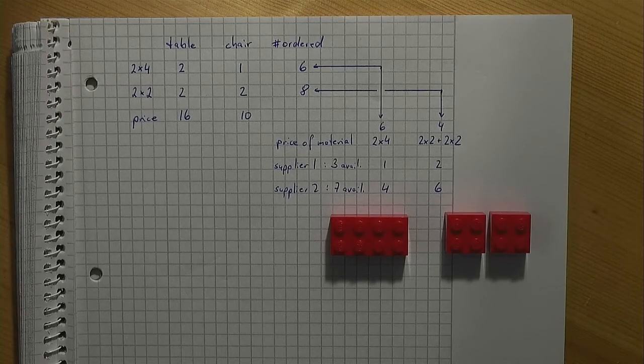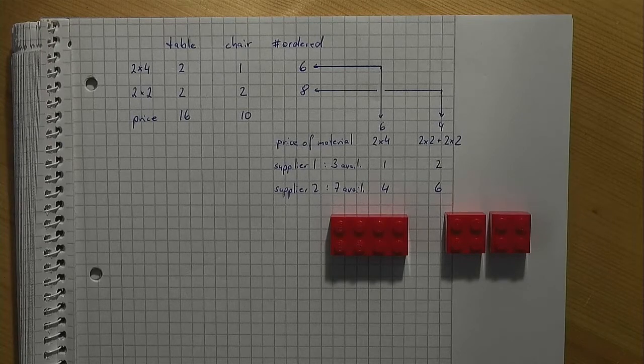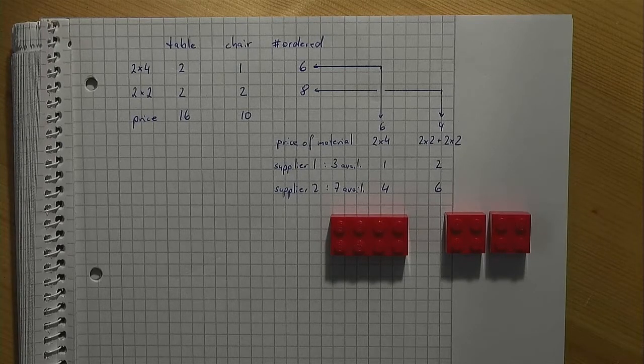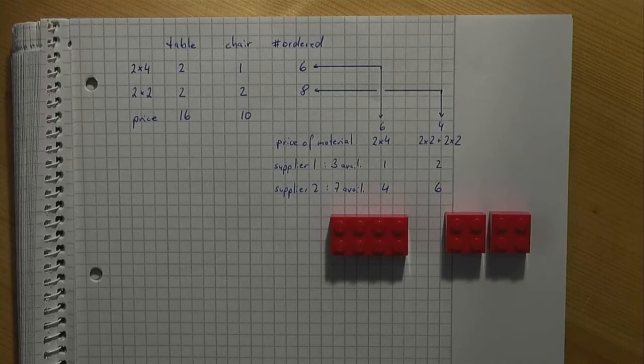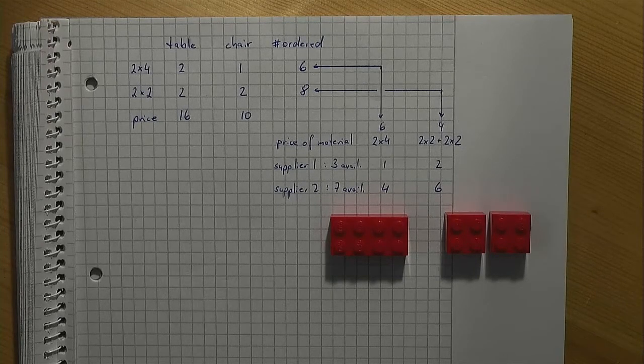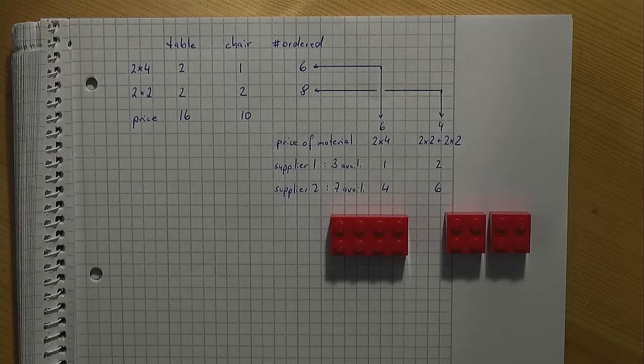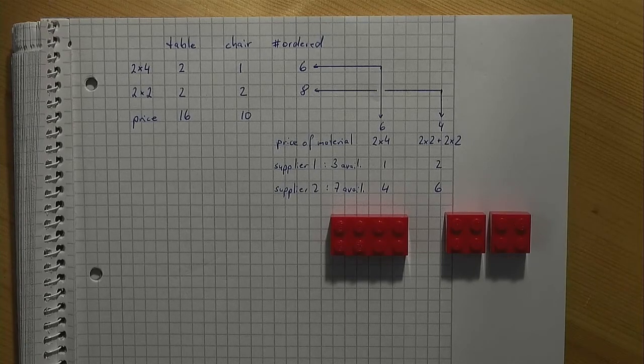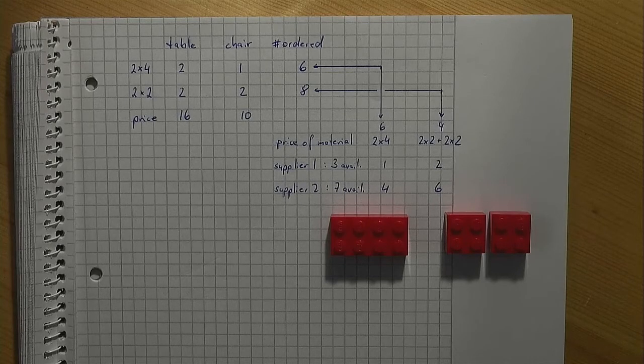Now our problem is to determine the number of tables and chairs to build and to decide from which supplier we are going to buy how many 2x4s or pairs of 2x2s respectively. Our objective is to maximize the profit contribution, where the profit contribution in our context is defined to be the revenue minus the cost for material.